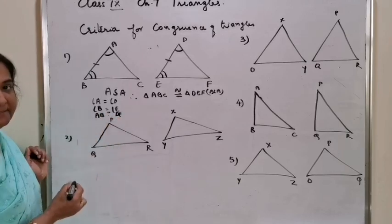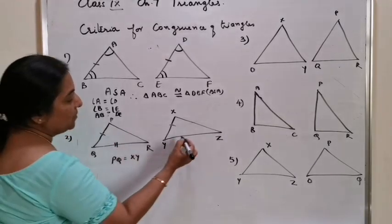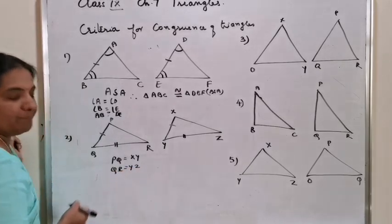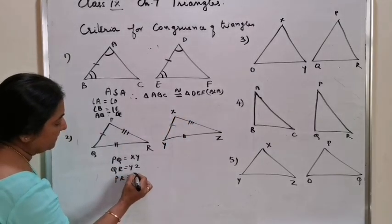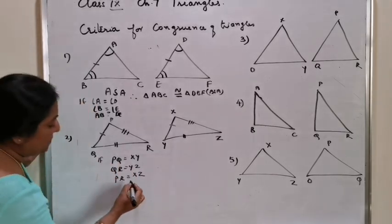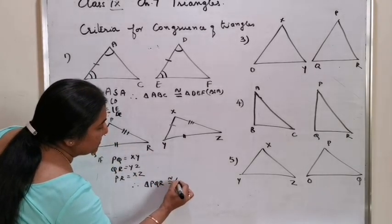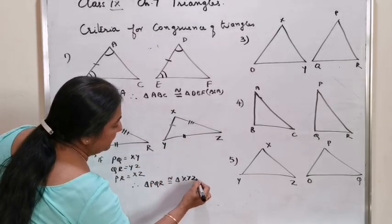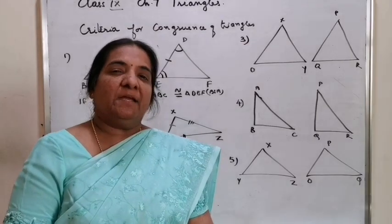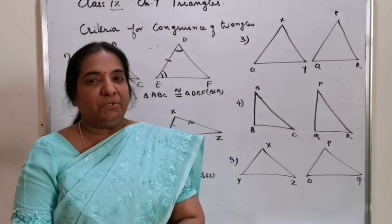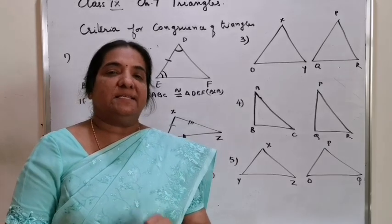The second criteria is SSS. Can you guess what it is? If side PQ and XY are equal, QR and YZ are equal, and PR and XZ are equal, then triangle PQR is congruent to triangle XYZ by side-side-side congruency. If all the sides of a triangle are equal to the corresponding sides of another triangle, the triangles are congruent by SSS congruence.